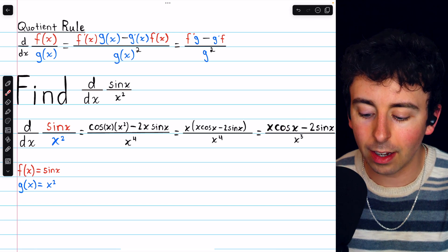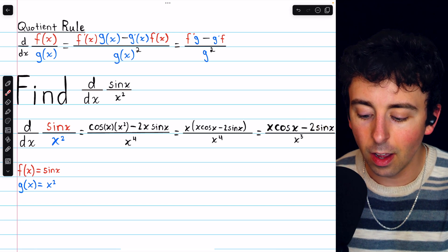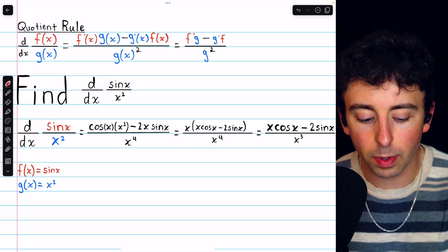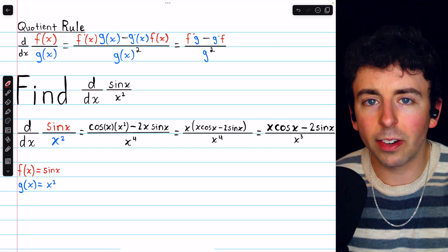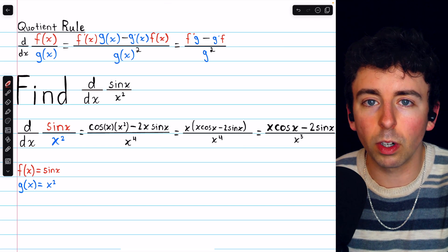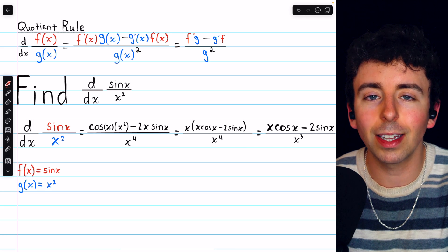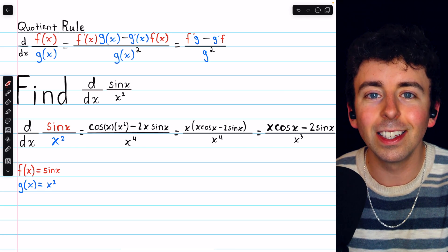The derivative is x cosine x minus 2 sine x, all divided by x cubed. Let me know in the comments if you have any questions, and be sure to check out my Calculus 1 course and Calculus 1 exercises playlists in the description for more. Thanks for watching.